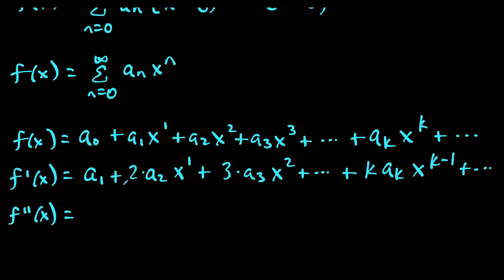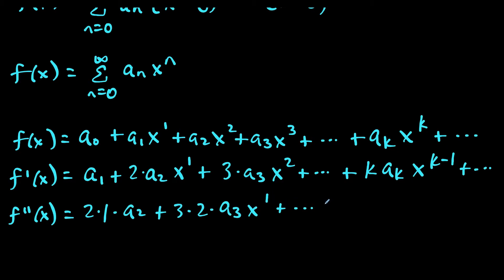For the second derivative, the derivative of a sub 1 goes to 0, giving us a new leading term. Applying the power rule again: 2 times 1 times a sub 2 — and the derivative of x is 1, so that's gone — then 3 times 2 times a sub 3 times x to the first, and continuing with k times k minus 1 times a sub k times x to the k minus 2, and this goes on forever.